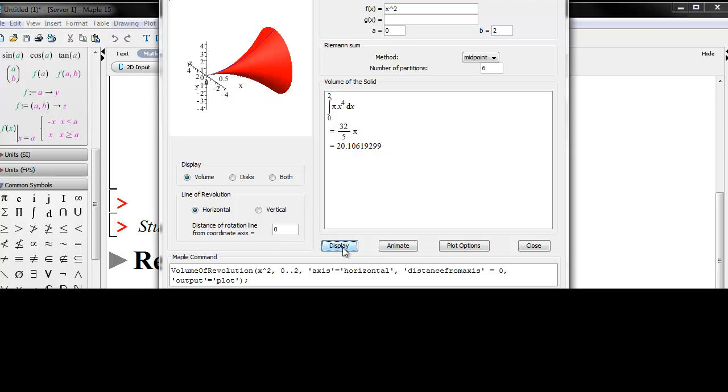And there, indeed, is the bugle or the witch's hat turned sideways. Now, if we click on disks, we can also see what some of these representative disks would look like. But let's just keep the volume in there for now.